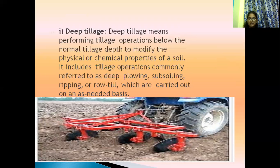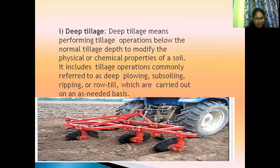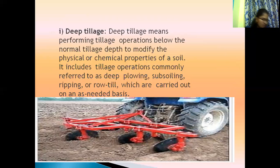In deep tillage, the following methods are used: deep ripping, planking, plugging, and subsoiling. Deep tillage means tillage beyond normal tillage depth to modify the physical or chemical properties of soil. It helps retain soil moisture by enhancing water infiltration and reducing soil erosion.